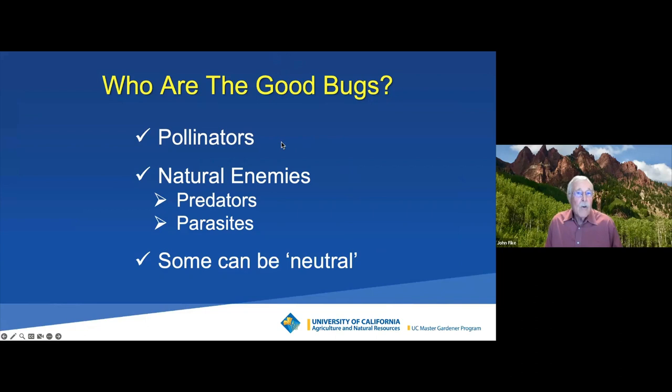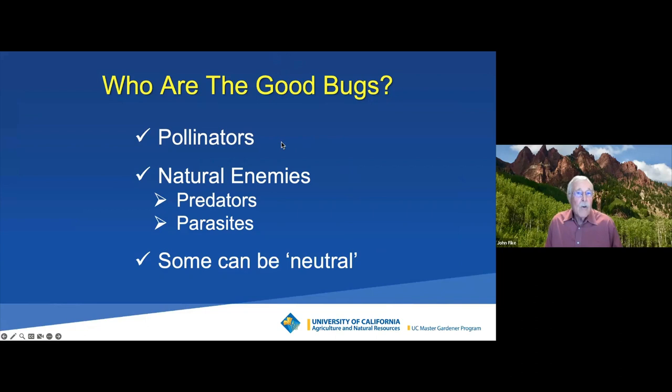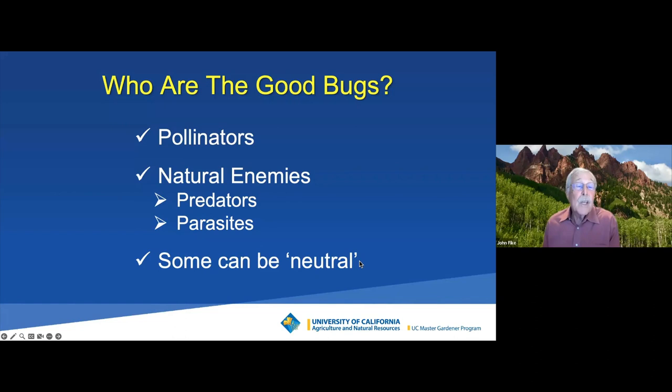Who are the good guys? There are different categories. The pollinators really have nothing to do with the bad bugs — they're just good things to have in the garden. Some insects can be considered neutral — crane flies and yellowjackets, for instance, can be good and bad. In the spring, yellowjackets pick up caterpillars and other soft-bodied insects like whitefly nymphs or aphids and take them back to the nest. Later in the summer, they become pests for us.